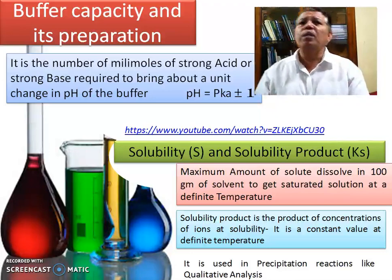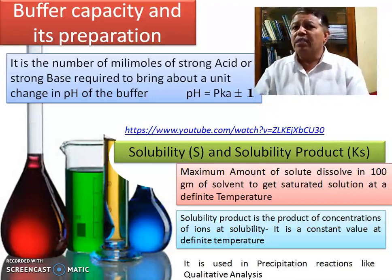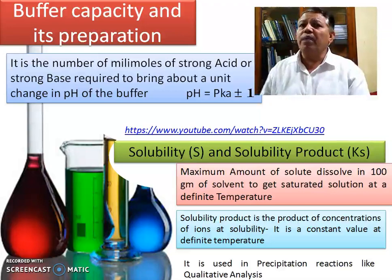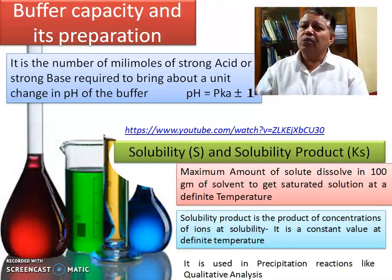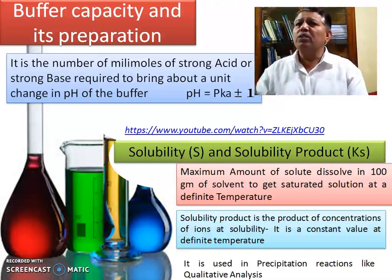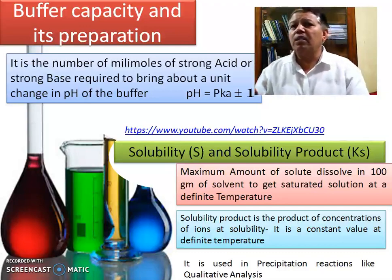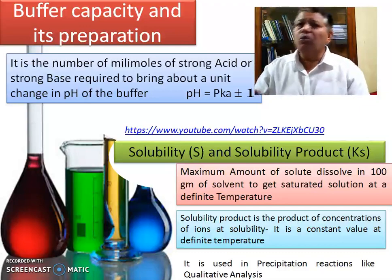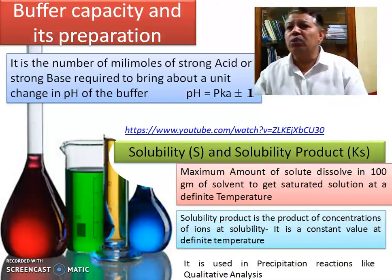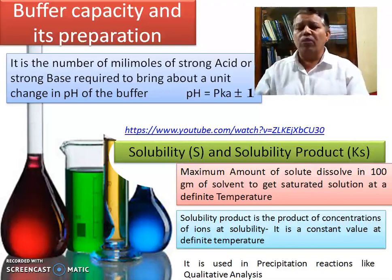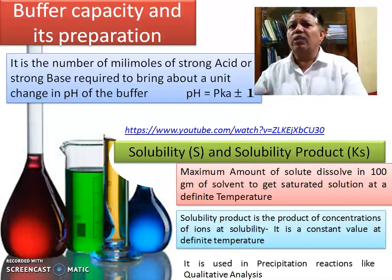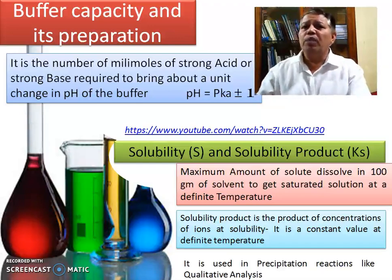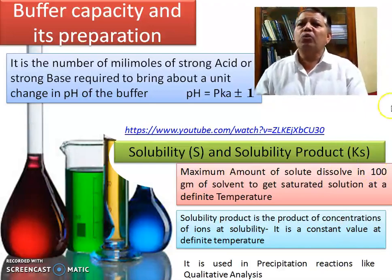In case of solubility and solubility product: the maximum amount of solute dissolved in a minimum amount of solvent to get a saturated solution at a definite temperature is the solubility. The solubility product is the product of the concentrations of ions at solubility at a particular temperature. This solubility and solubility product is used in precipitation reactions for qualitative analysis in both inorganic and organic qualitative analysis.